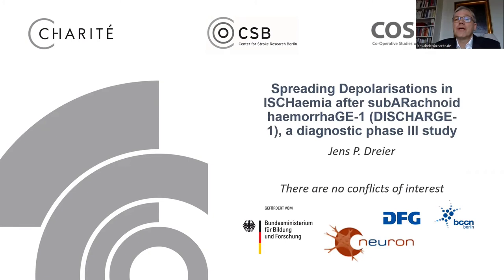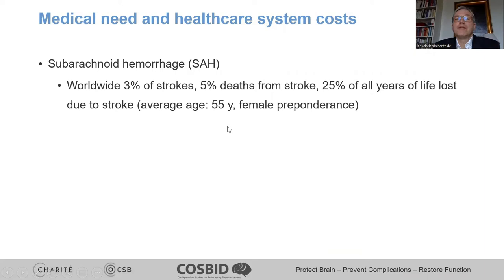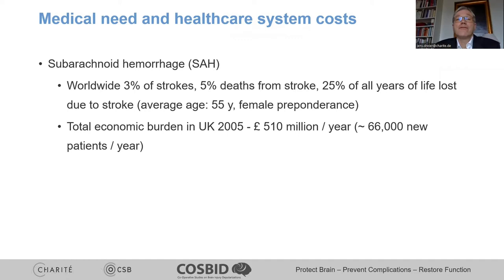Thank you very much for the invitation to report on our clinical study DISCHARGE-1: spreading depolarization and ischemia after subarachnoid hemorrhage. Subarachnoid hemorrhage is a relatively rare form of stroke but is responsible for 25% of all years of life lost due to stroke, explained by the young average age and high mortality. It is also unusual because of the female preponderance and is very costly — in the UK alone, it was estimated in 2005 that the total economic burden amounts to 510 million pounds annually.